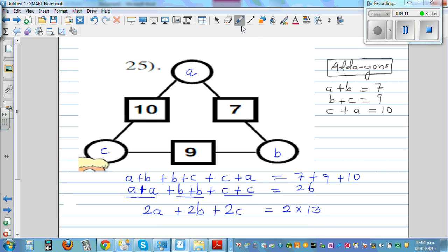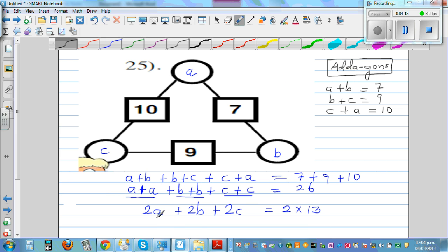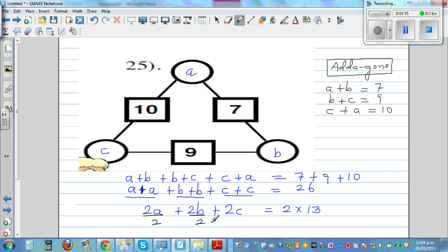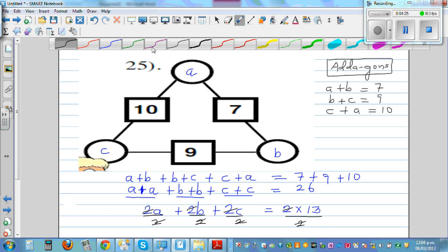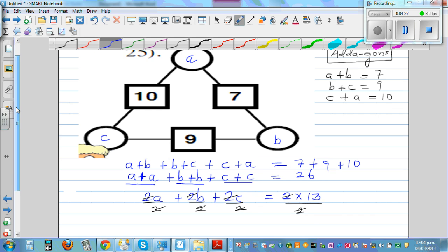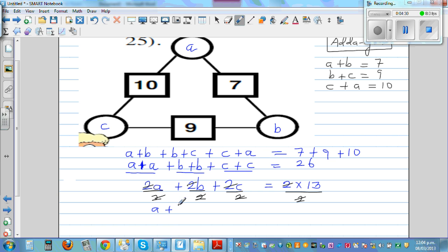I'm going to write 26 as 2 times 13. Now I'm going to divide the whole thing by 2. If I divide this side by 2, this by 2, this by 2, you can also divide this side by 2. So 2 and 2 gets cancelled. You can write A plus B plus C, the 3 numbers should add to 13.